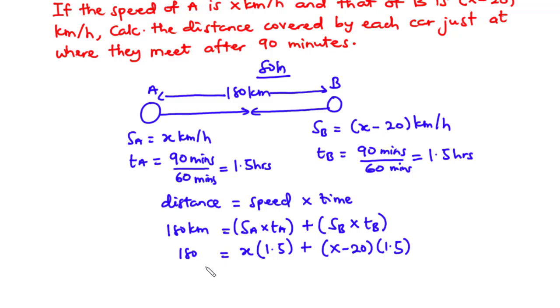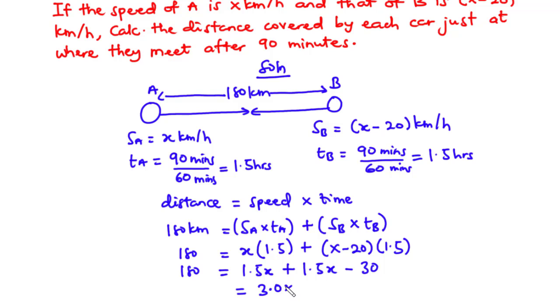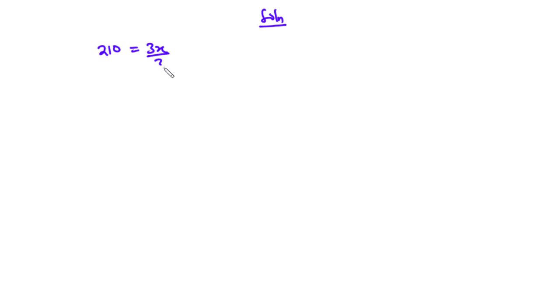Solving this equation: 180 = 1.5x + 1.5x − 30. So 1.5x + 1.5x = 3x, and transposing −30 to the left side gives 180 + 30 = 210. Therefore 210 = 3x, and dividing through by 3 gives x = 70.